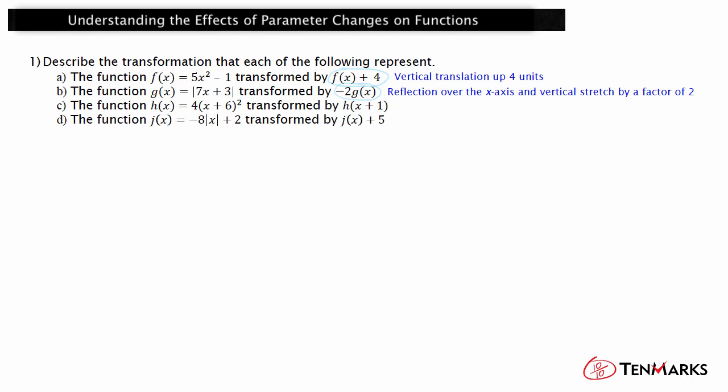The function h(x) = 4(x + 6)² is transformed by h(x + 1). The 1 is being added to the x in the parentheses. This represents a horizontal shift. Since k is positive 1, this represents a horizontal translation left 1 unit.